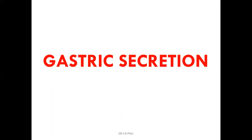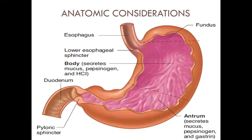Anatomically, the stomach is divided into: the lower esophageal sphincter region (also called the cardia), the fundus, the body (with proximal and distal parts), and the antrum. The body and fundus contain cells secreting mucus, pepsinogen, and hydrochloric acid. The antrum contains cells secreting mucus, pepsinogen, and gastrin — with many G cells producing gastrin.